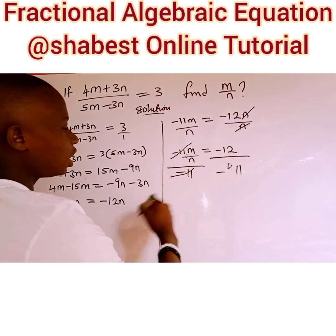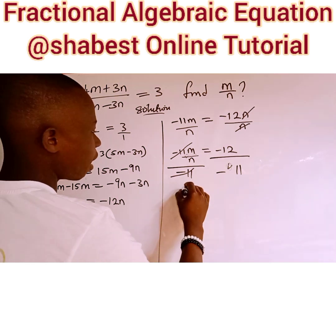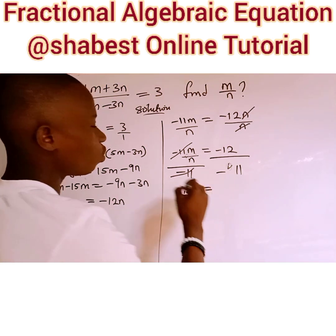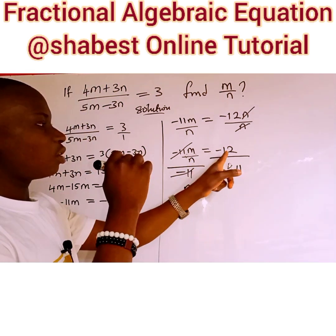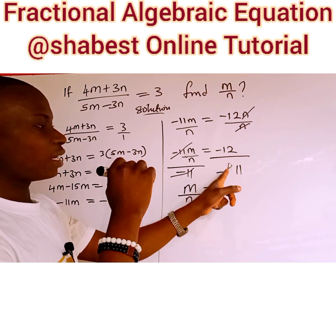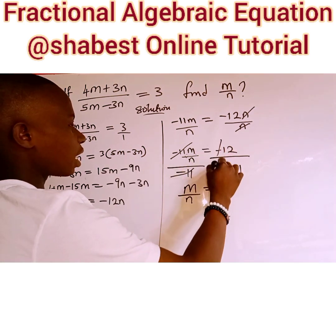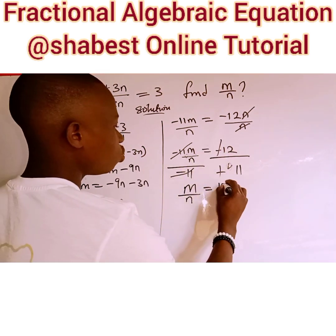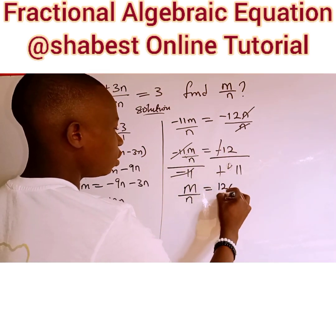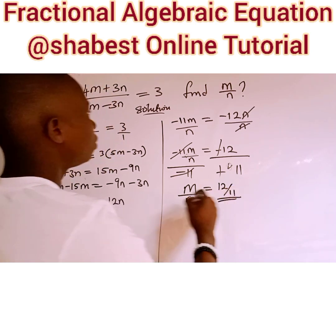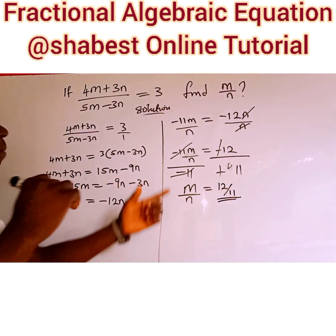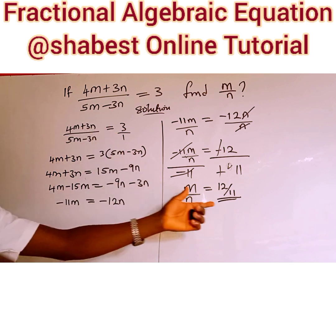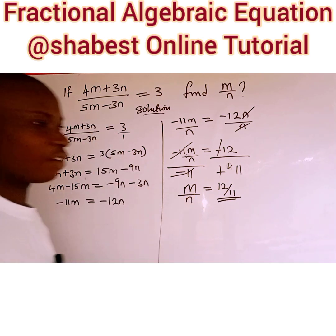On the left hand side I have m over n, which is equal to minus 12 divided by minus 11. The two negatives cancel, giving 12 divided by 11. So the value of m over n in this equation is 12 over 11.